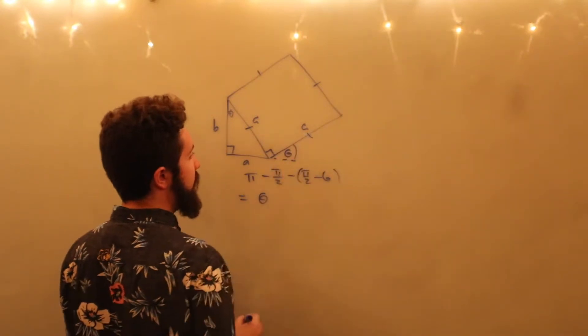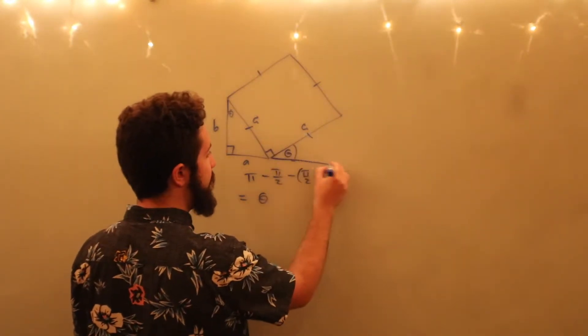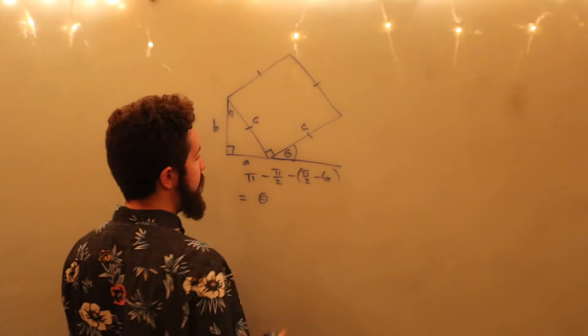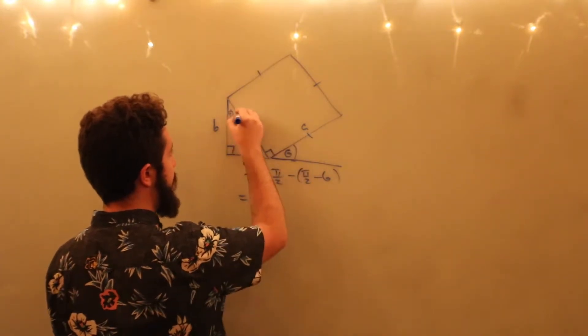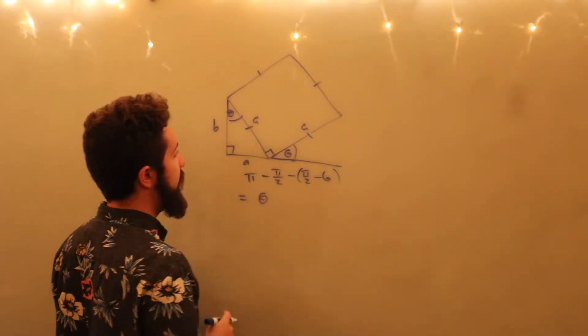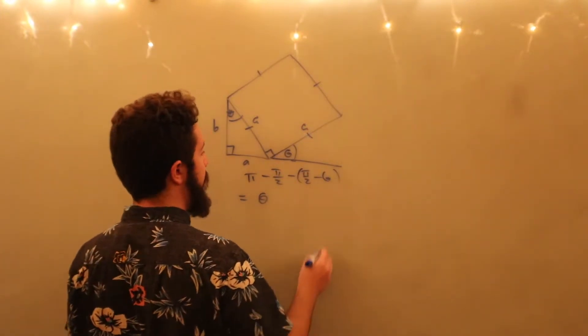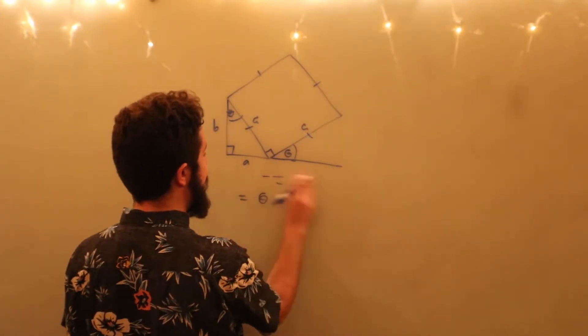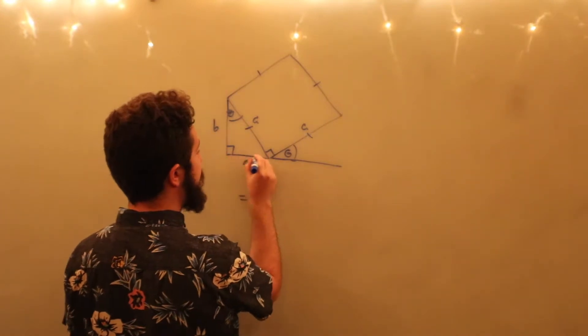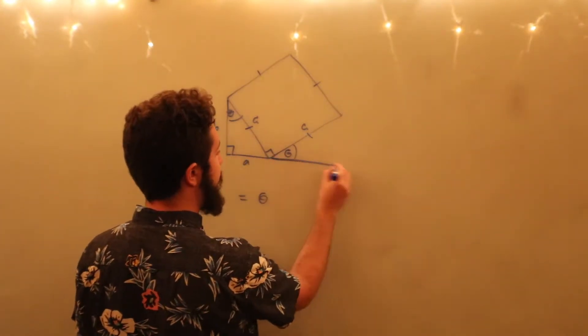So we're going to have right here the same angle that we have there. Now, given that that's true, what we can do is if we extend this line segment length B...